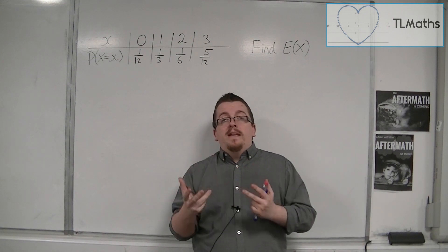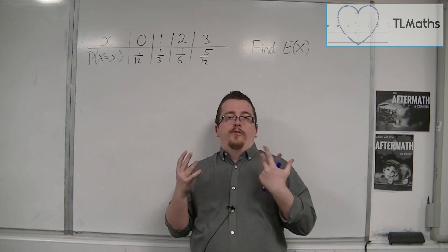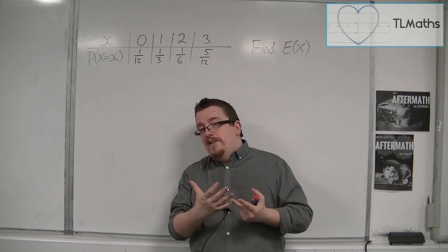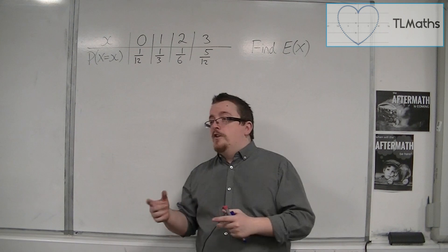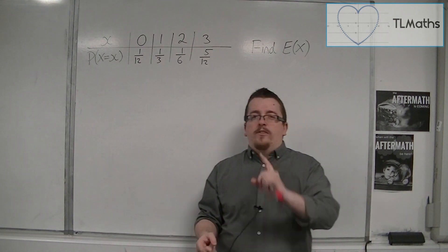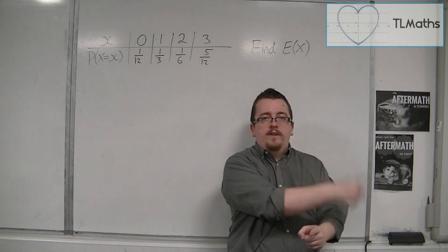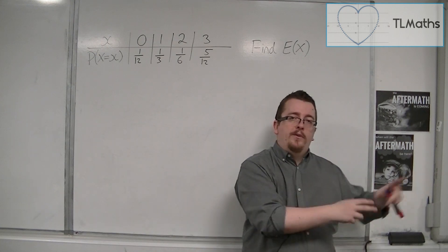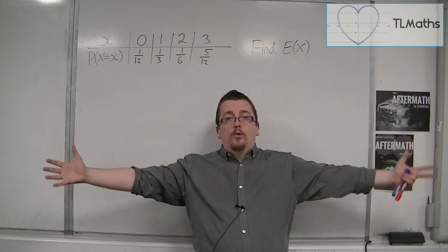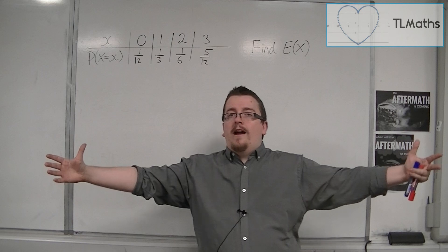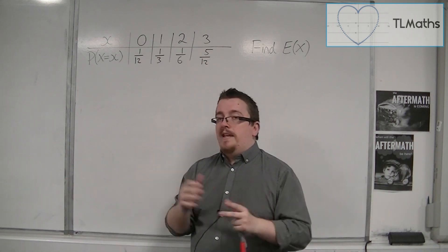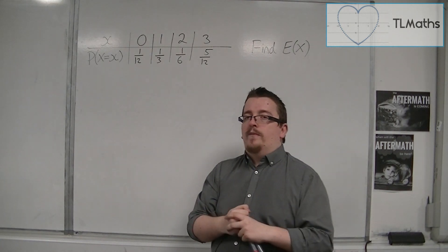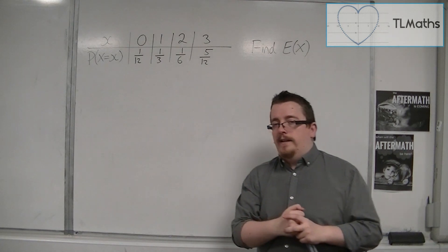Now that doesn't mean that I could actually get 1.1 or 2.1, but what it means is that over a long period of time, if I got a 0, then a 3, then a 1, then a 2, then a 3, then a 2, then a 1, and so on and so forth, and I added all of those together and divided by how many there were, I should get something close to E(x), this expected value of x. And that's what we're going to calculate here.